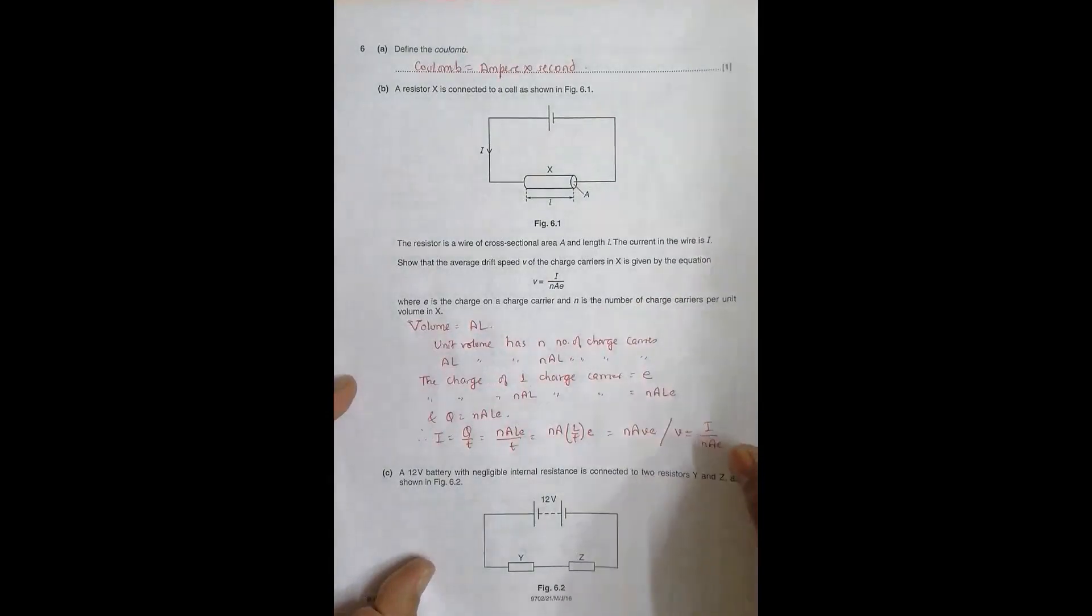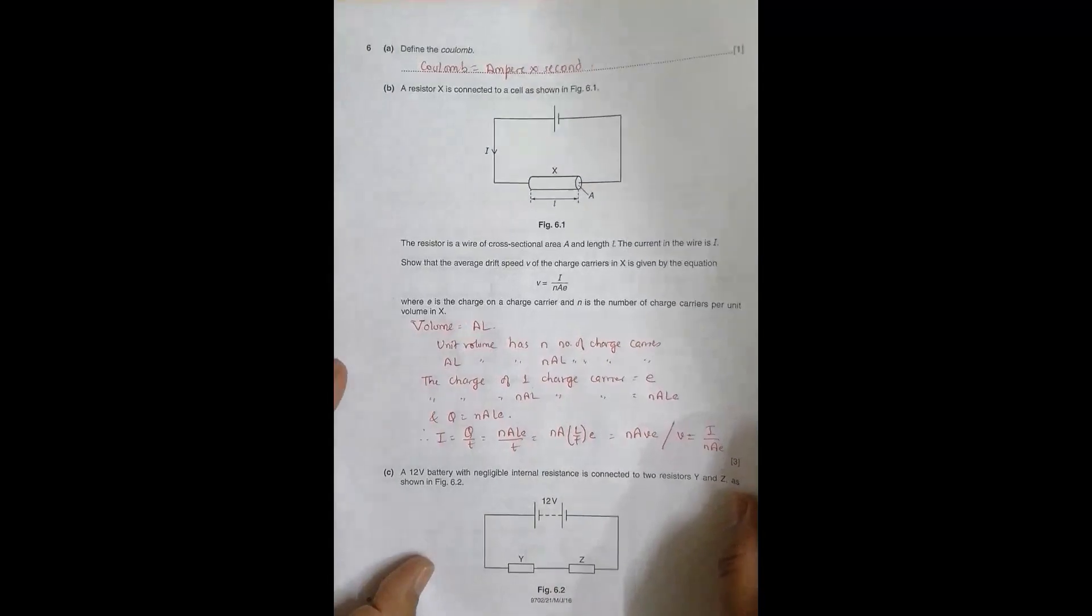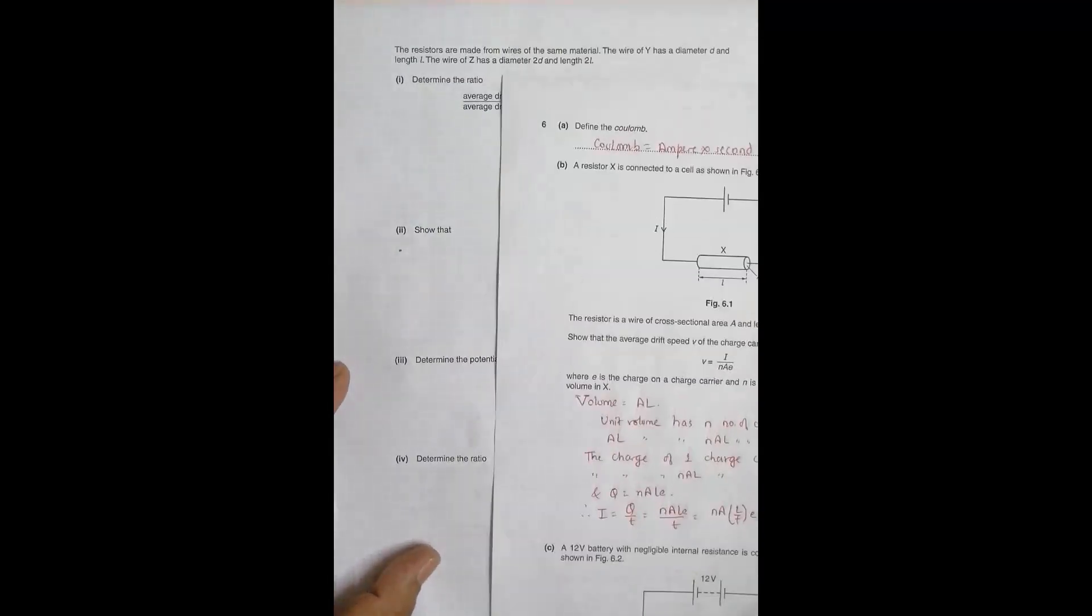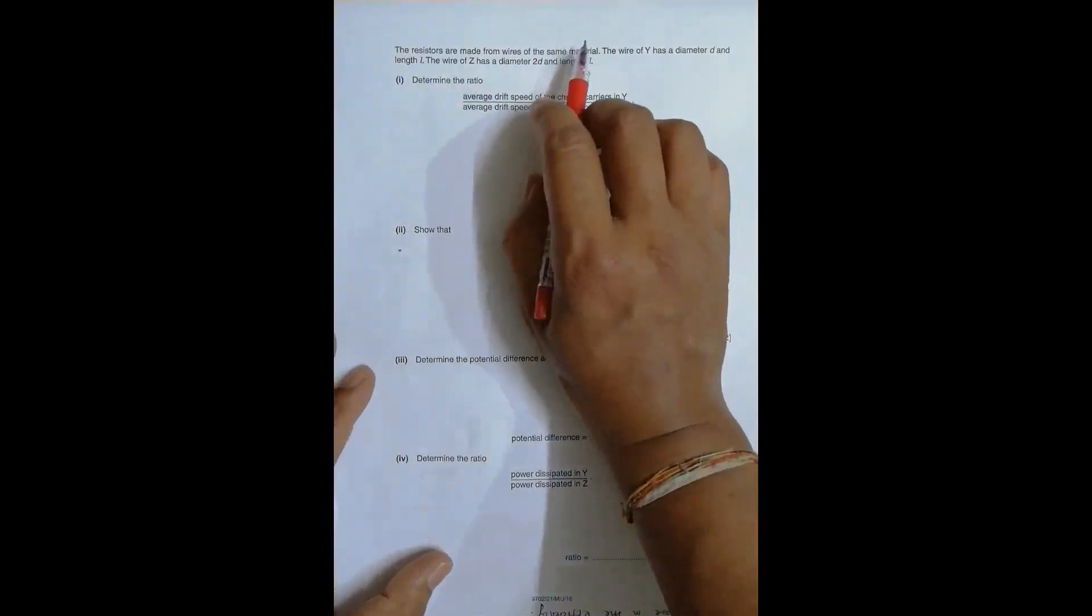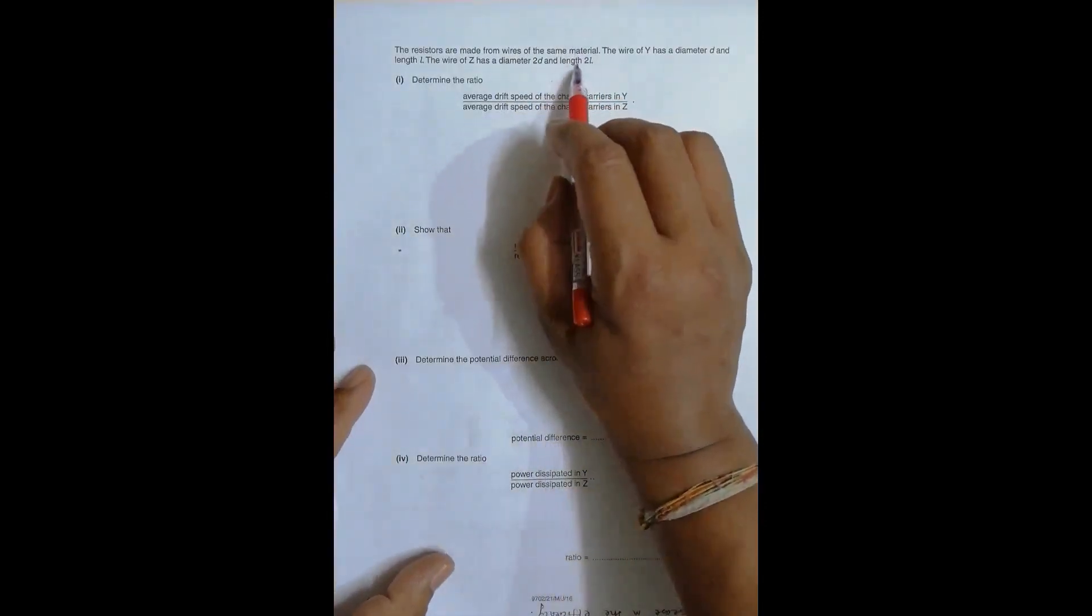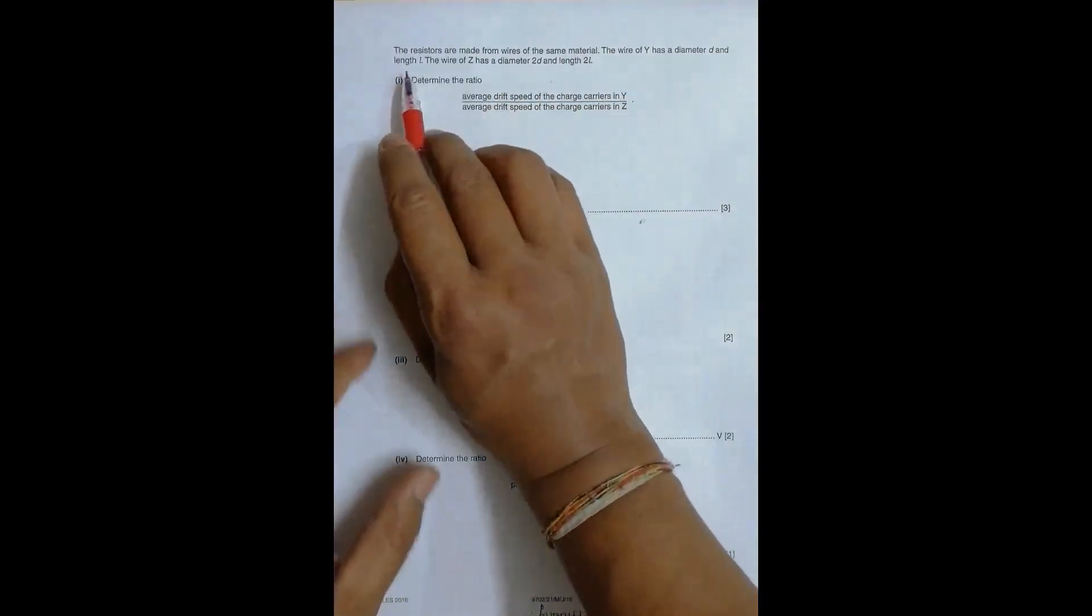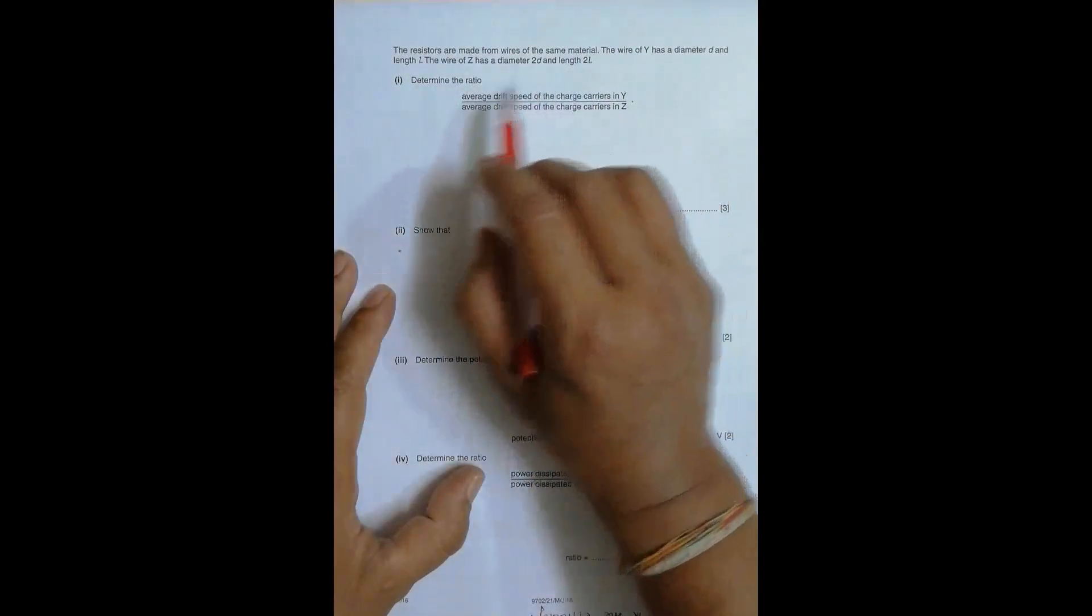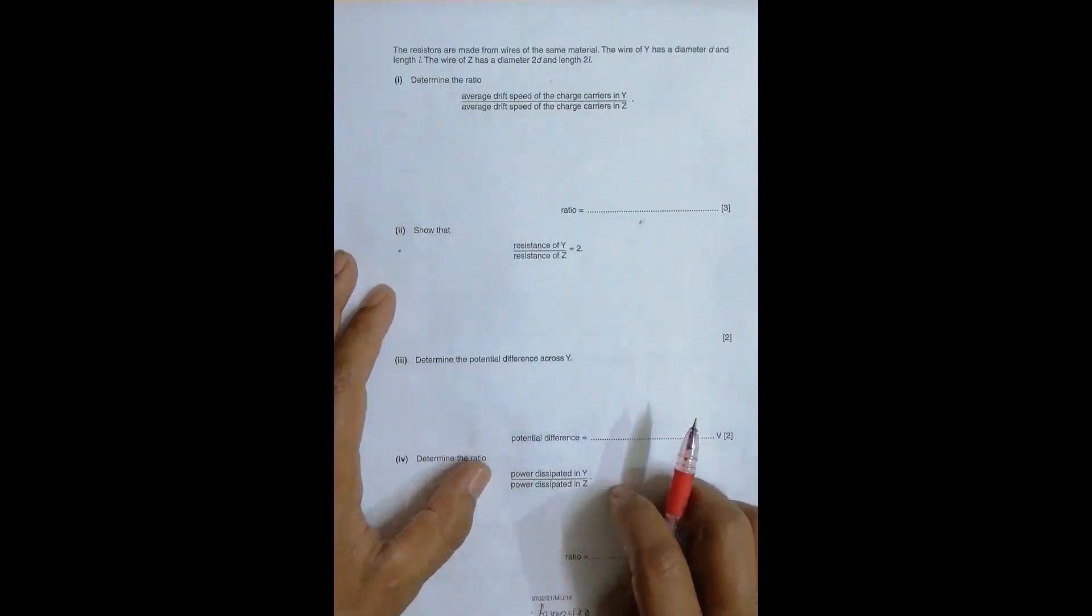Now in number C, it says a 12 volt battery with negligible inner resistance is connected to two resistors Y and Z as shown in figure 6.2. The resistors are made of wires of the same material, so that means this N factor is same for both. The wire of Y has a diameter D and length L. The wire of Z has diameter 2D and length twice L. Determine the ratio of the average drift speeds of the charge carriers in Y and Z.